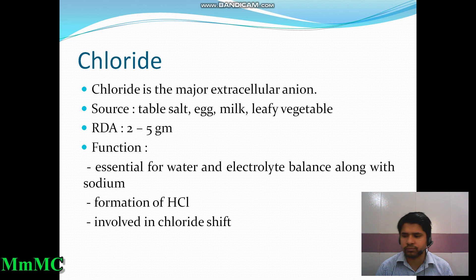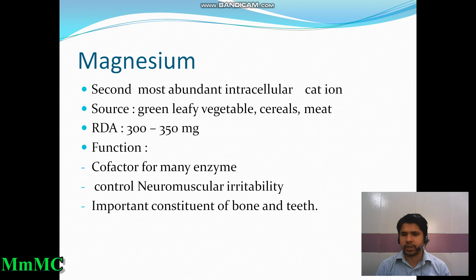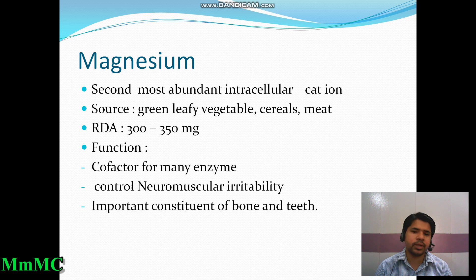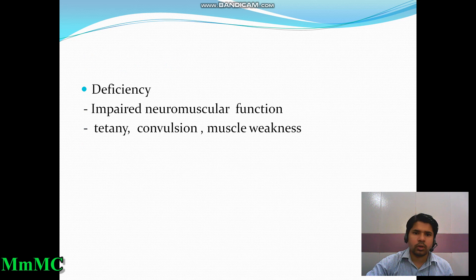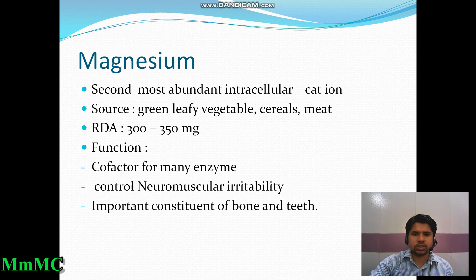Magnesium is the second most abundant intracellular cation. Its sources include green leafy vegetables, cereals, and meat. Its RDA is 300 to 350 milligrams per day. Its functions include acting as a co-factor for many enzymes, controlling neuromuscular irritability, and being an important constituent of bone and teeth. Deficiency of magnesium causes impaired neuromuscular function, tetanic convulsion, and muscle weakness.